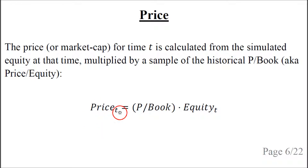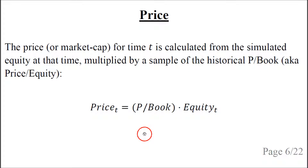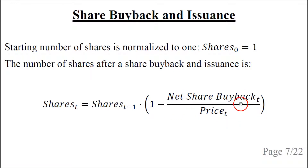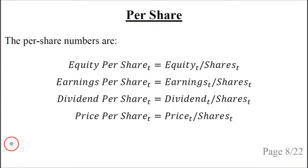The market cap for year t is defined as the simulated equity for year t multiplied by a sample of the price-to-book ratio. The starting number of shares is normalized to 1. The number of shares for year t is defined as the number of shares for the previous year multiplied by a factor that takes share buyback net of issuance into account. The per share numbers are found simply by dividing the simulated equity, earnings, dividends, and price by the number of shares.